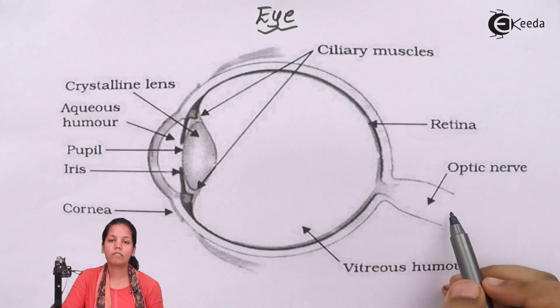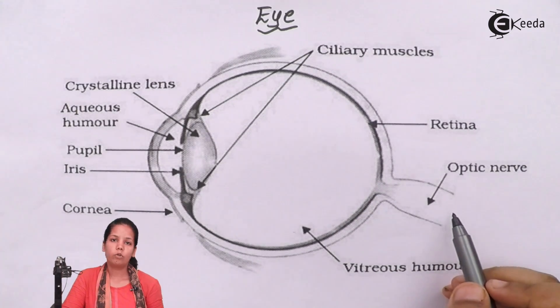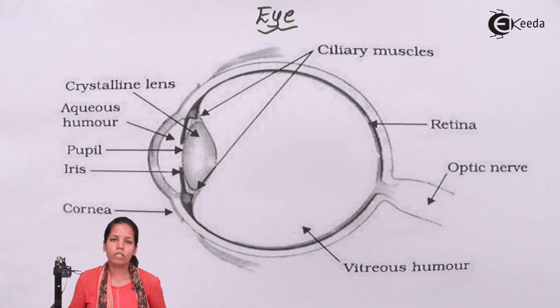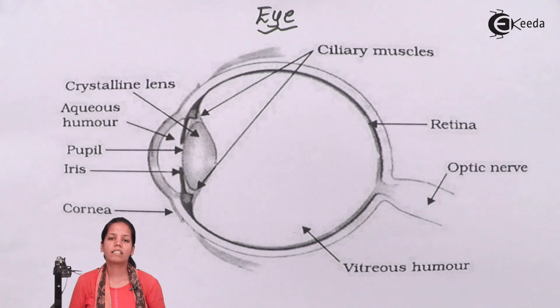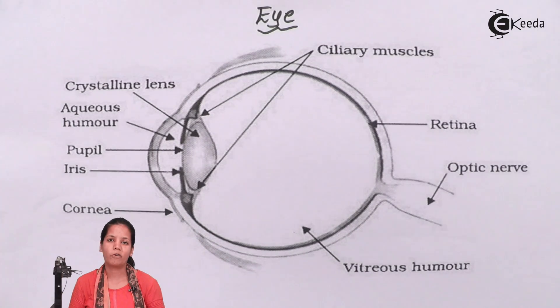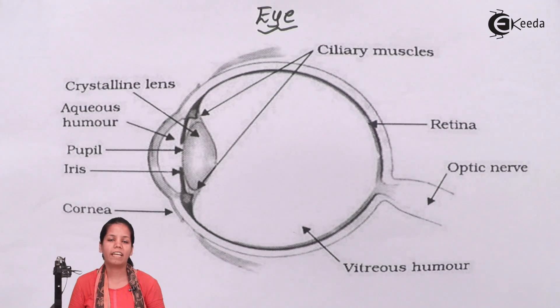This optic nerve carries the information — the image — to the brain. In this part of the chapter we studied about the eyes, the structure of the eyes, and I hope you are very clear about it. Thank you.